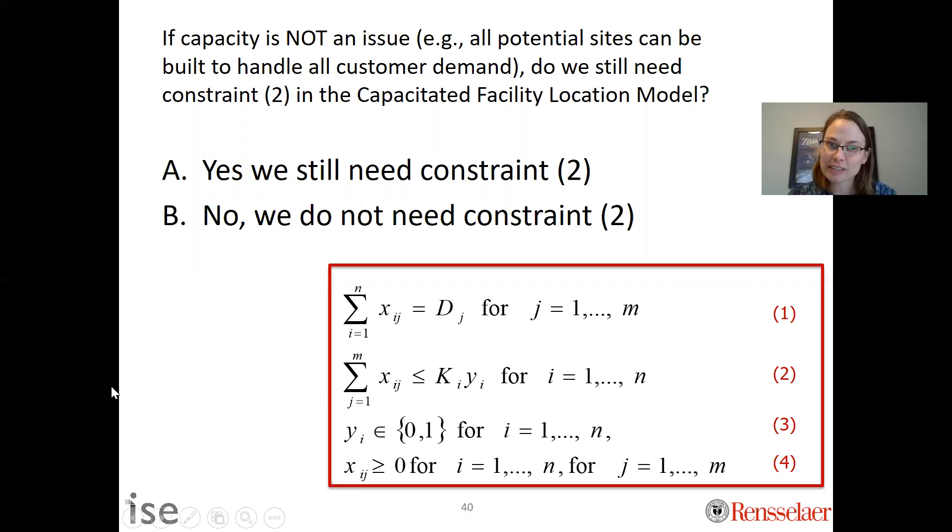The correct answer here is A, yes we still need constraint two. Even if this capacity thing is not really something we need to worry about—we have plenty of capacity so if I build we'll be good—we still need constraint two because we need to map x's and y's.